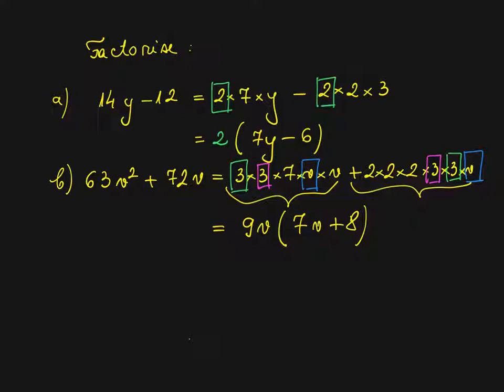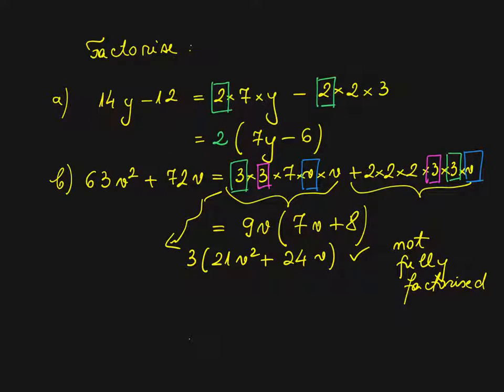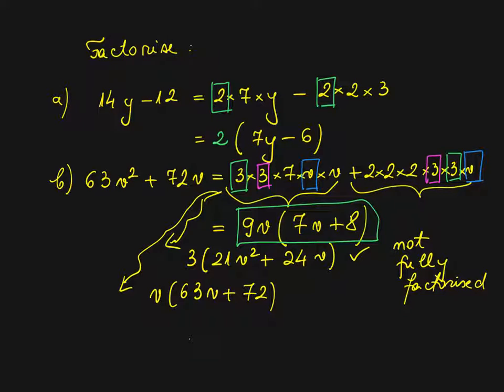Some students will just notice a 3 and write 3 brackets 21v squared plus 24v. That's correct, that's not a mistake, but this is not fully factorized. So your answer is incomplete. Some might notice that I can put a v in front and write v bracket 63v plus 72. That's correct, but not fully factorized. So 9v brackets 7v plus 8 is fully factorized.